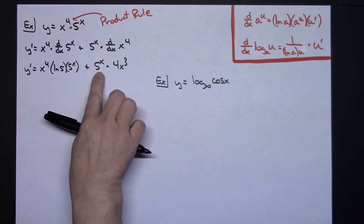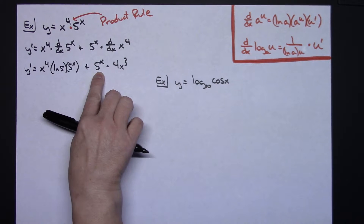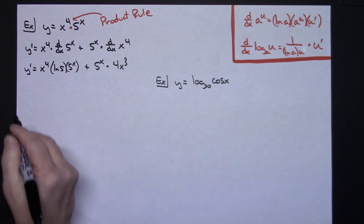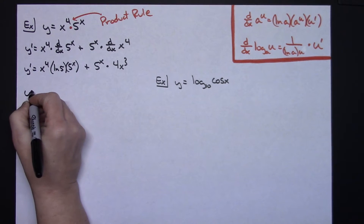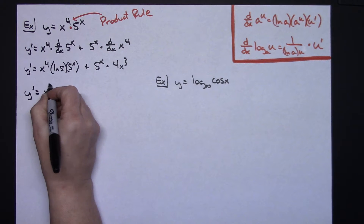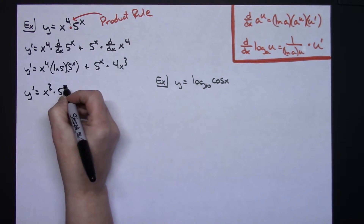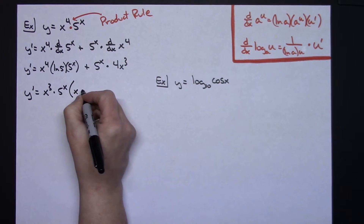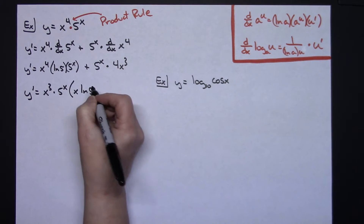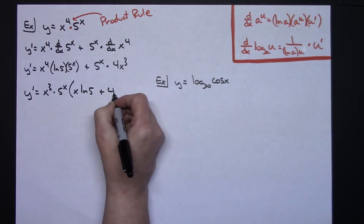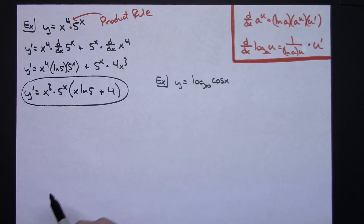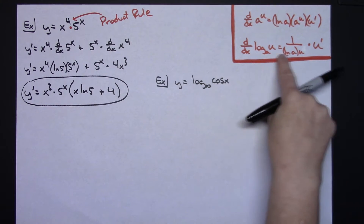At this point I would clean it up by factoring out the greatest common factor. Both terms share a factor of 5 to the x and x to the third, so: y prime equals x to the third times 5 to the x, times the quantity (x times natural log of 5 plus 4). So we implemented product rule along with that formula and then factored out the greatest common factor.